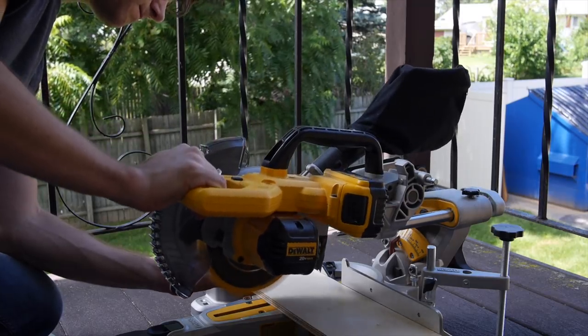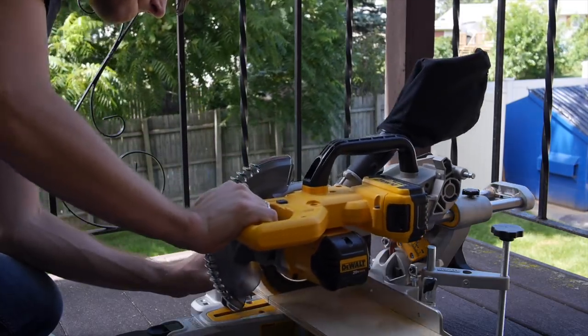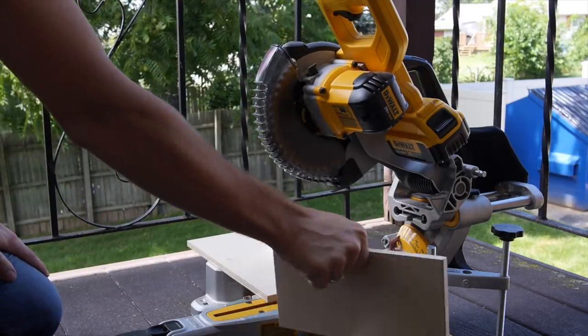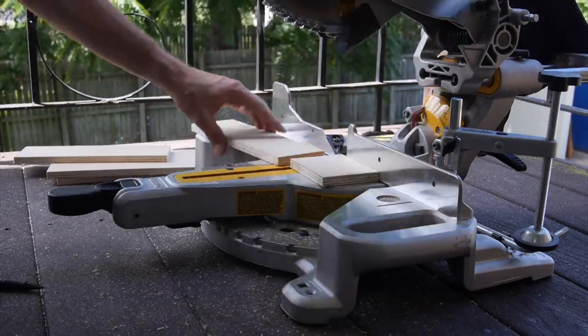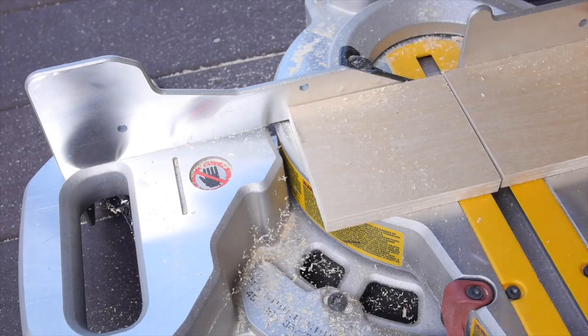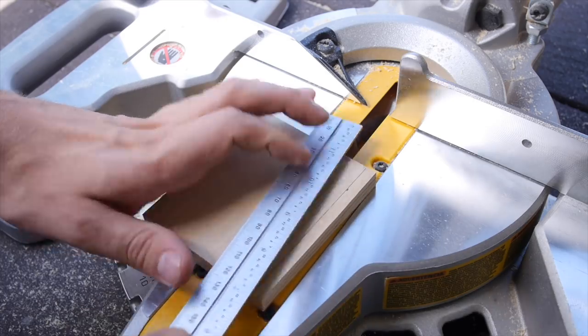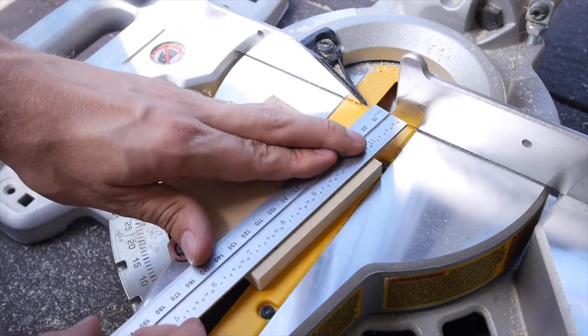Once I had the pieces for the inner box ripped, I cut them to length for all the sides as well as for the bottom piece. This bottom piece is really important because it's what actually holds the drill into the box.